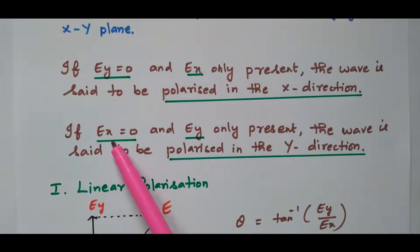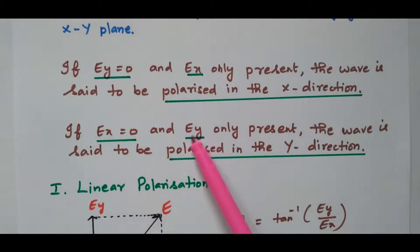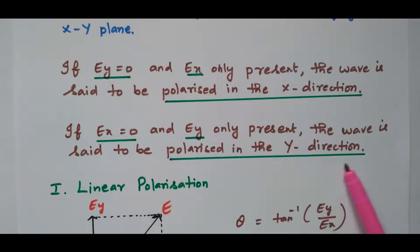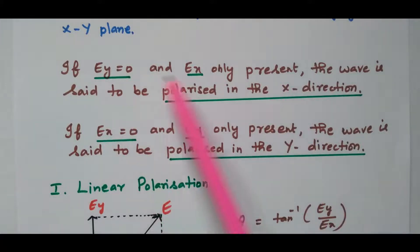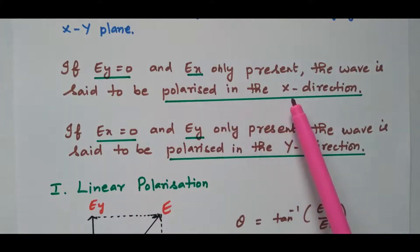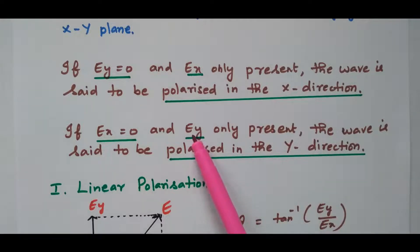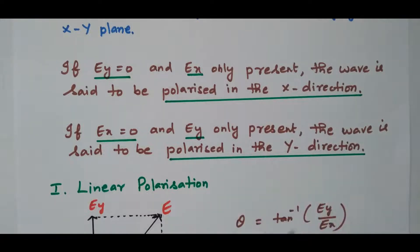Similarly, if Ex is 0 and only Ey is available, then the wave is said to be polarized in the y-direction. So if only Ex is available, it is polarized in x-direction; if only Ey is available, it is polarized in y-direction; the other component is 0.